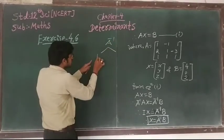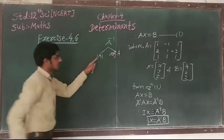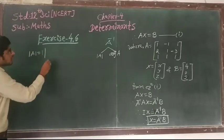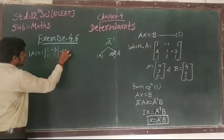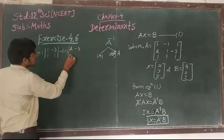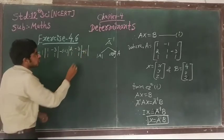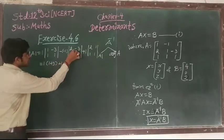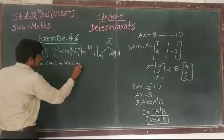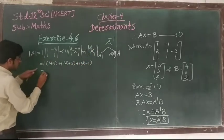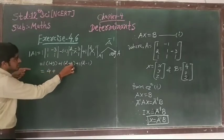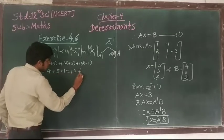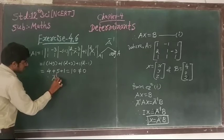We can find two things: first, we have to find the determinant of A, and then find the adjoint of A. The determinant of A equals 1 times (1 times 1 minus (-2) times 1) minus (-1) times (2 times 1 minus (-2) times 1) plus 1 times (2 times 1 minus 1 times 1). This gives 1 times (1 plus 2) plus 1 times (2 plus 2) plus 1 times (2 minus 1), which equals 3 plus 4 plus 1 plus 5 plus 1, equals 10. Since det(A) is not equal to 0, A inverse exists.